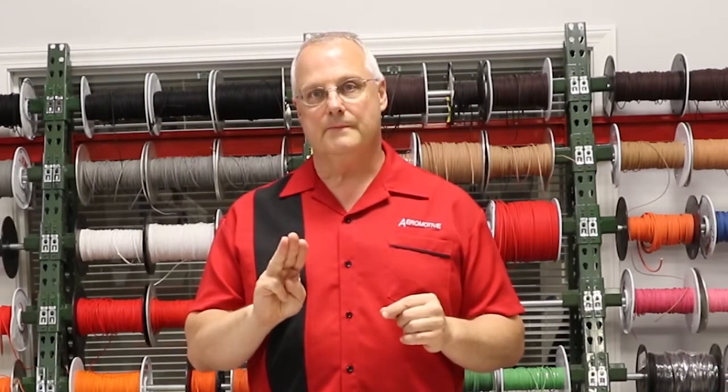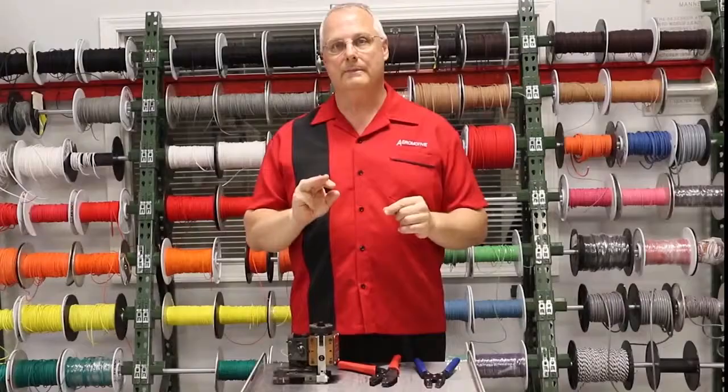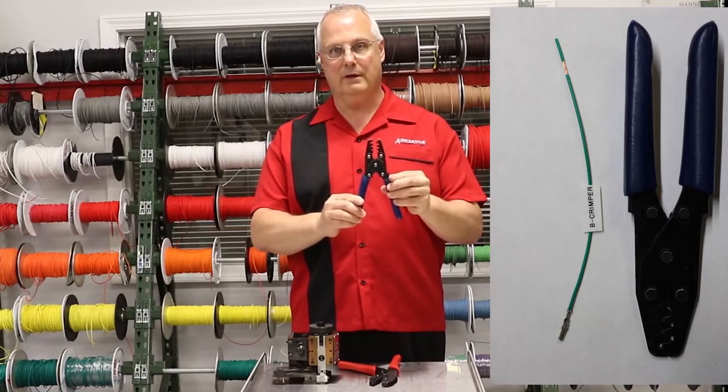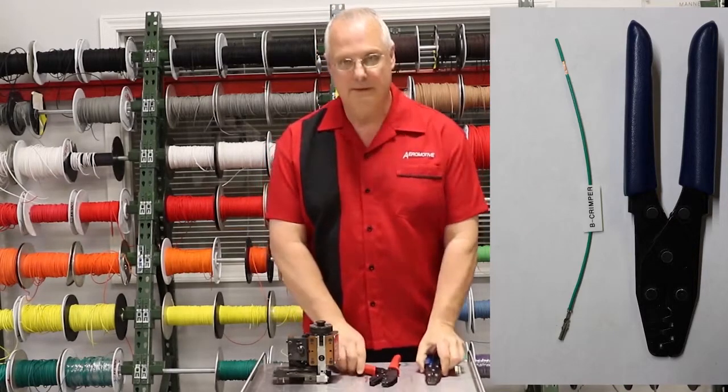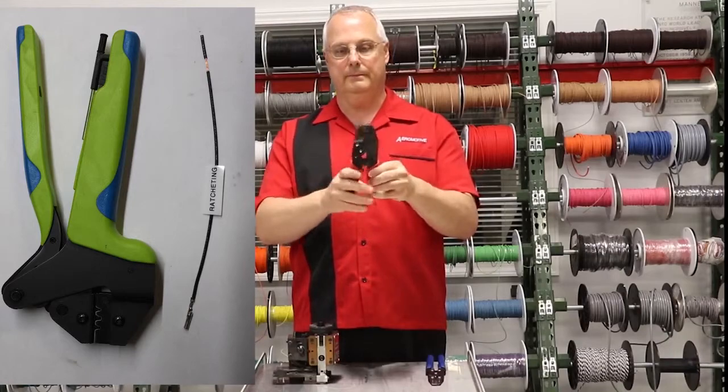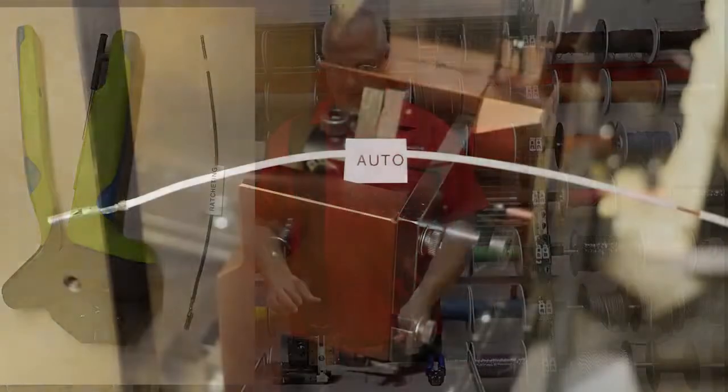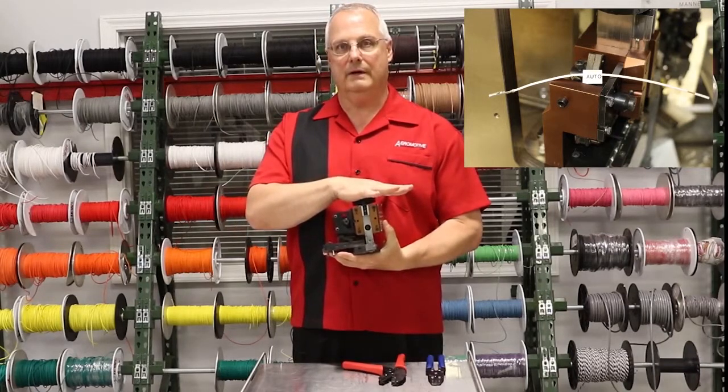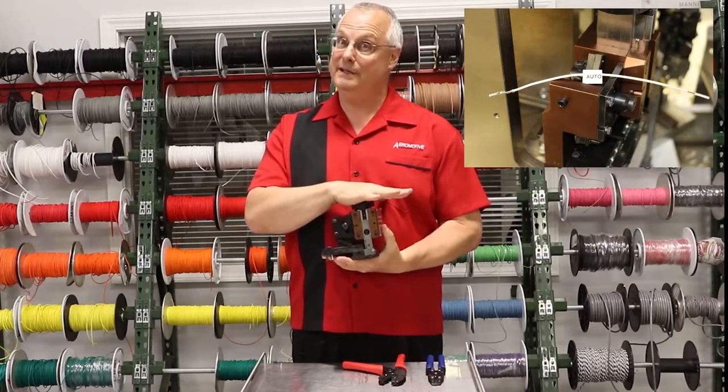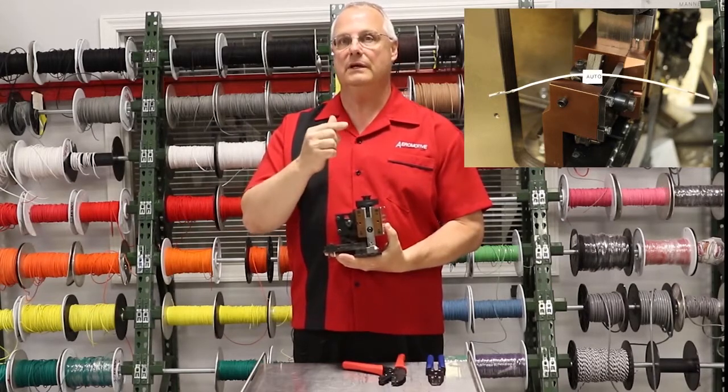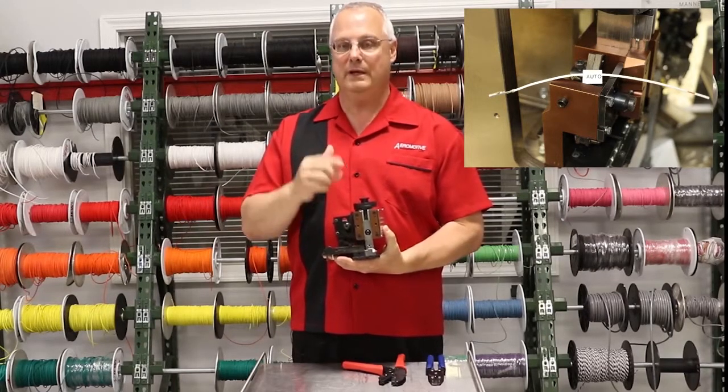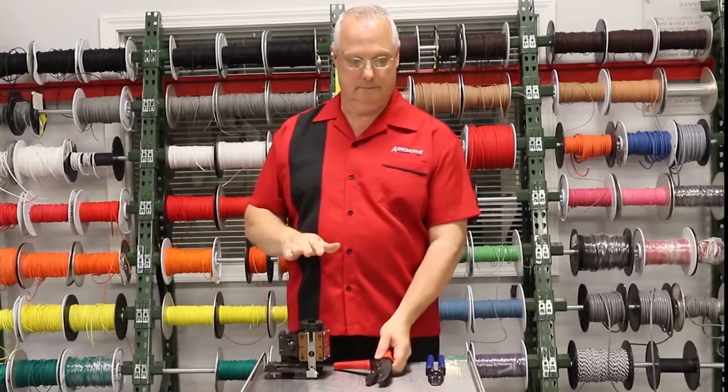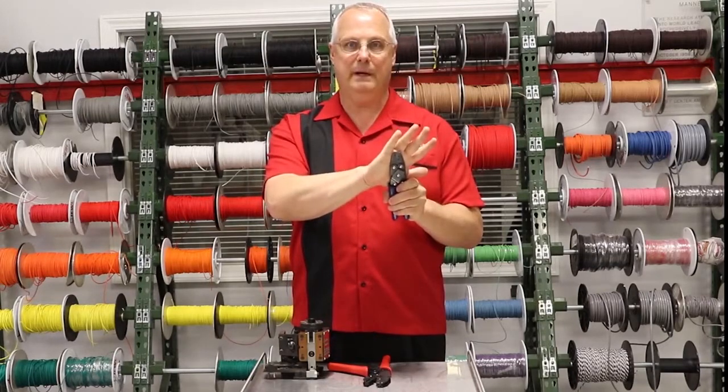We're going to look at three different types of crimps and test their pull strength. The first one we're going to look at is the standard B crimper used quite often in the field. The next one is your ratcheting type crimper, and third we're going to take a look at the auto feature. Highly recommend it whenever possible. Obviously you can't have one of these in the field, but at least we'll give you an idea of the difference between OEM quality, better tooling, and basic hand crimping.